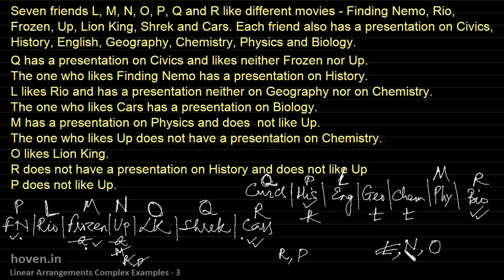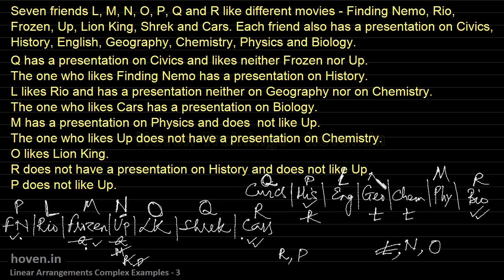We are left with N and O to place in Geography and Chemistry. Revisiting the condition: the one who likes Up doesn't have a presentation on Chemistry. N likes Up, so N cannot be allocated to Chemistry. Therefore N is allocated to Geography and O is allocated to Chemistry. The full allocation is now complete.